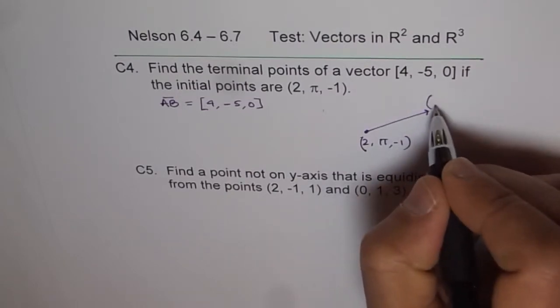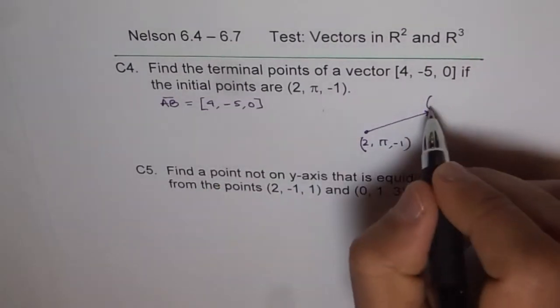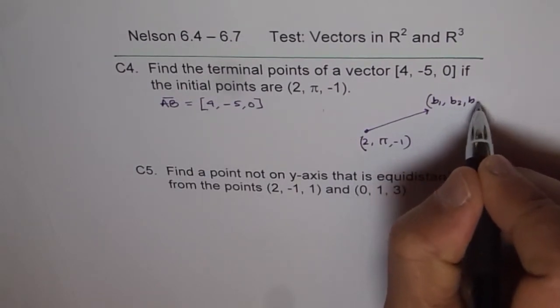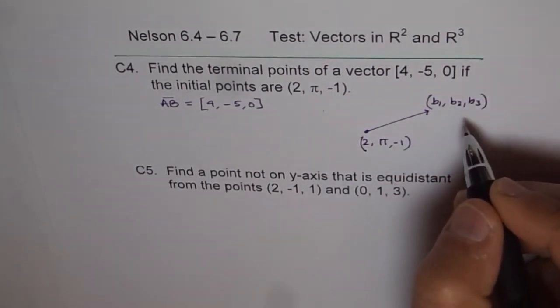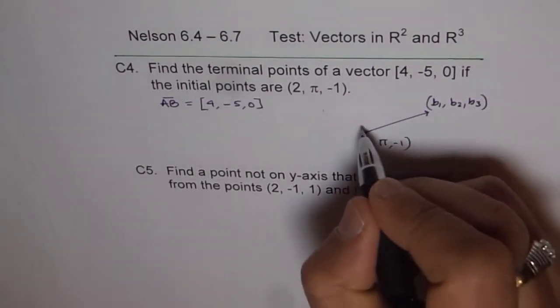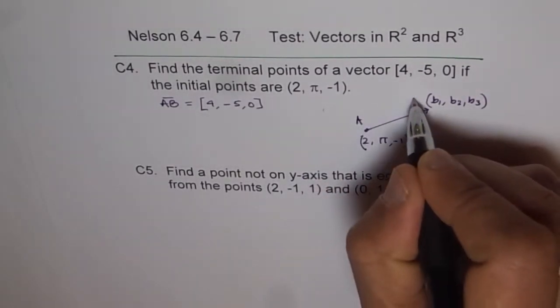So these are the points B. Let's call them b₁, b₂, b₃ as the three components of the point B. So this is your A and that is B.